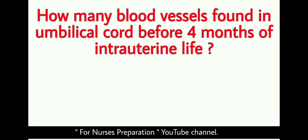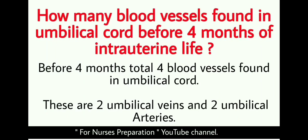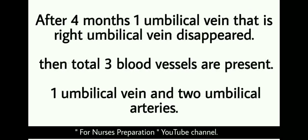How many blood vessels are found in the umbilical cord before 4 months of intrauterine life? Before 4 months of age, a total of 4 blood vessels are found in the umbilical cord: 2 umbilical veins and 2 umbilical arteries. After 4 months of intrauterine life, 1 umbilical vein — the right umbilical vein — disappears. Then a total of 3 blood vessels are present in the umbilical cord: 1 umbilical vein and 2 umbilical arteries.